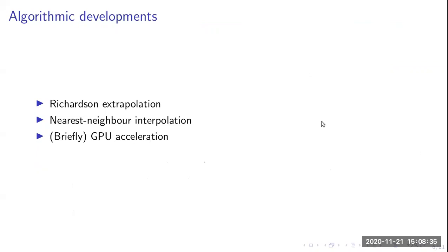In the rest of this talk I'll discuss three particular adaptations that can give significantly improved efficiency and expand the range of problems that can be solved: the very old idea of Richardson extrapolation and how it can be useful for this system; some work we've been doing in Birmingham on nearest neighbor interpolation; and briefly some work that Myra has been leading on GPU acceleration.